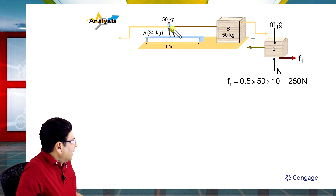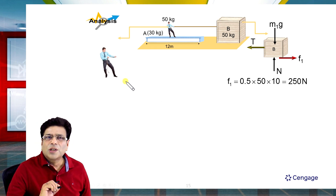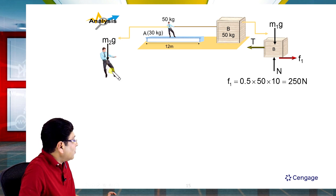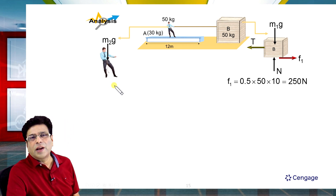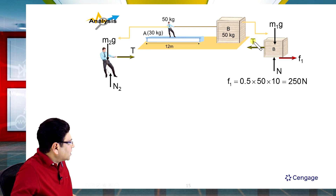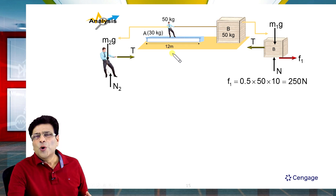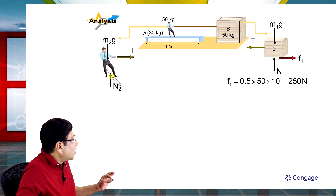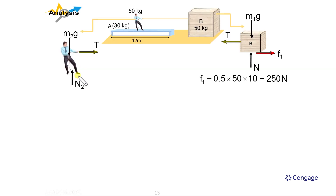Now let us discuss the forces on the man. Weight acts downward, normal reaction acts upward, and tension acts rightward. Since the man is not moving with respect to the ground, the net force on the man is zero. Therefore, the friction force offered by the platform on the man acts in the leftward direction.